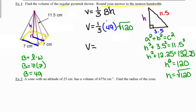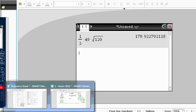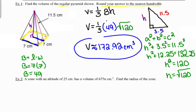I'm going to grab my calculator and do the fraction one-third times the area of my base which is 49 times the height which is the square root of 120. And we want to round that to the nearest hundredth. So to the nearest hundredth, 178.92. I'm going to use the squiggly equals to indicate that's an approximate or a rounded number. And since volume is always measured in cubic units, this would be centimeters cubed or cubic centimeters.